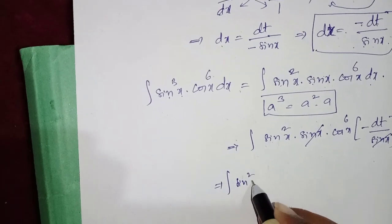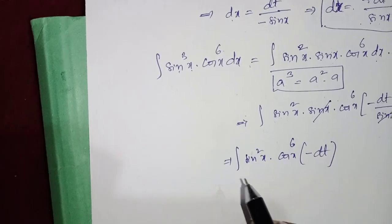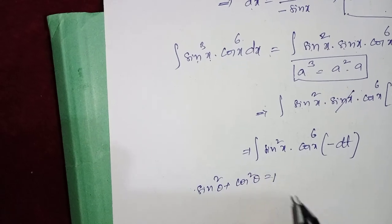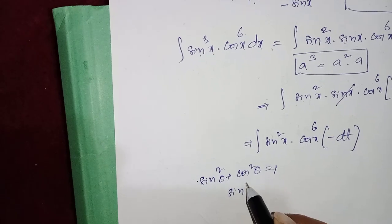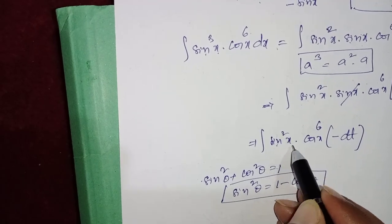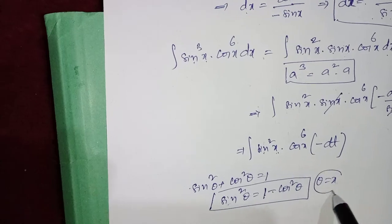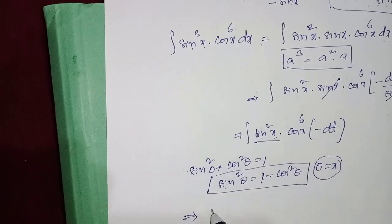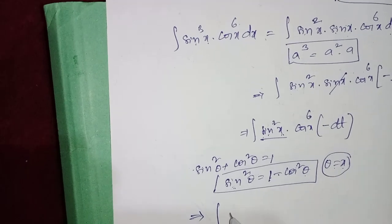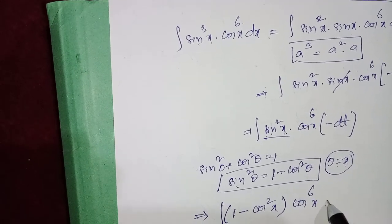That gives ∫sin²x · cos⁶x · (−dt). From the trigonometric identity sin²θ + cos²θ = 1, we get sin²θ = 1 − cos²θ. Since θ = x here, we substitute: sin²x = 1 − cos²x, giving ∫(1 − cos²x) · cos⁶x · (−dt).